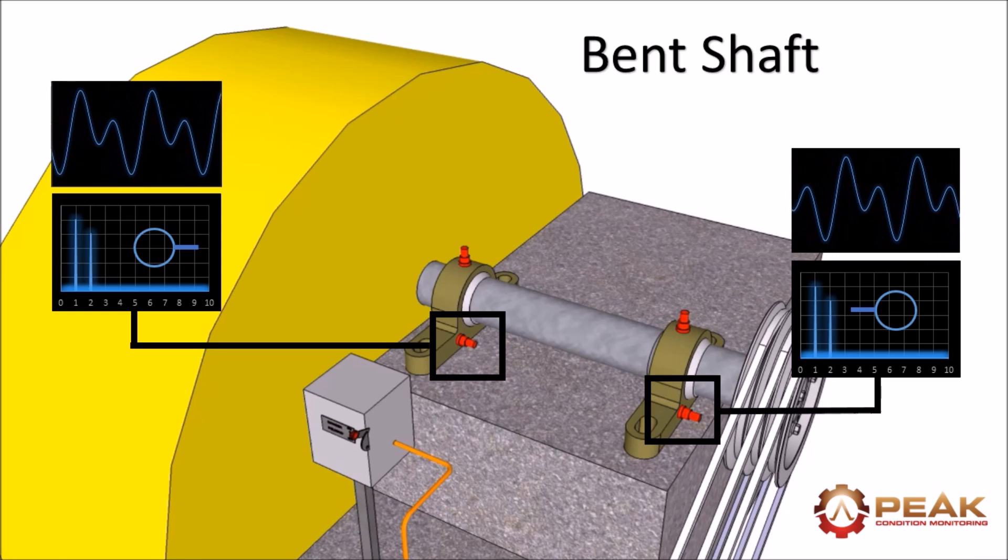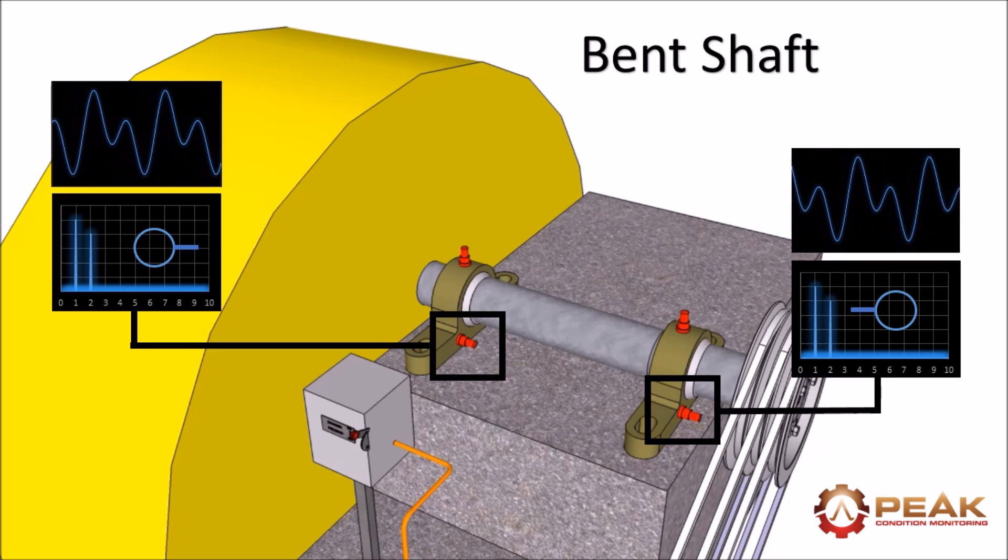If the phase of the two waveforms is out by 180 degrees then the problem is caused by a bent shaft.